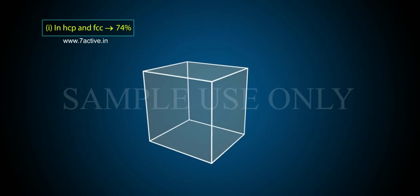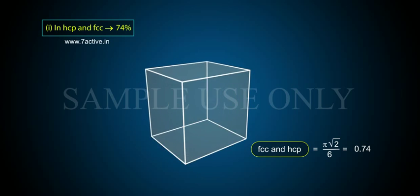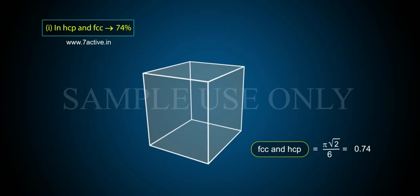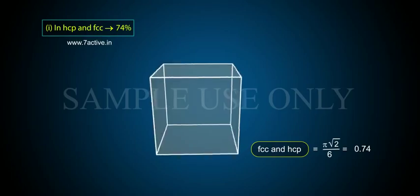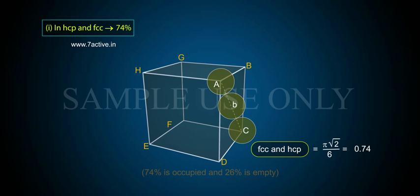In HCP and FCC, the packing efficiency is 74%. FCC and HCP = π√2 / 6 = 0.74. So 74% is occupied and 26% is empty.